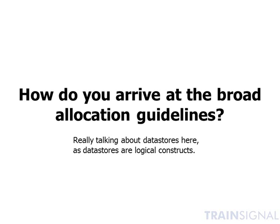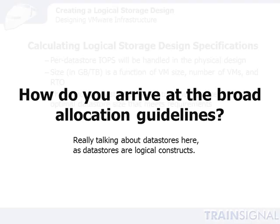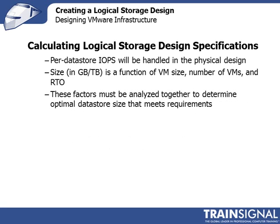How do we determine the size of those buckets? Is there a process to arrive at an optimal value? There actually is a process and a set of calculations you can go through. We're not going to focus as much on IOPS here because many arrays decouple capacity from IOPS through storage pooling or auto-tiering mechanisms. Instead, we'll focus on size in gigabytes or terabytes as a function of average VM size, number of VMs, and the RPO/RTO for your environment.